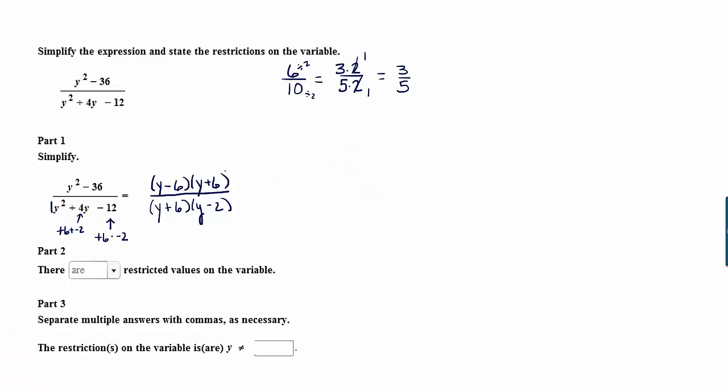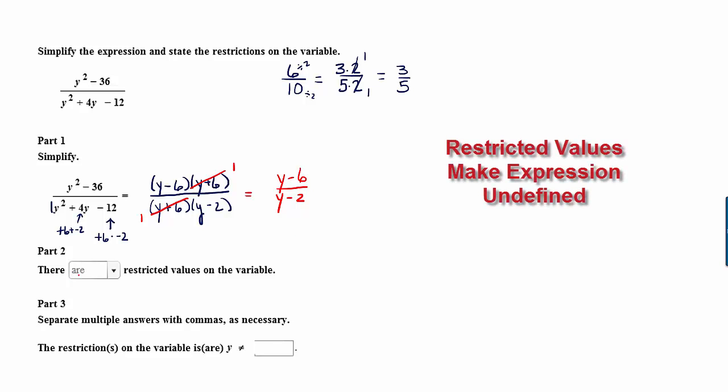In the numerator and denominator, we have y plus 6. Dividing those out leaves us with a factor of 1. And so this expression reduces to y minus 6 over y minus 2. In the second part, they ask whether or not we have restricted values.